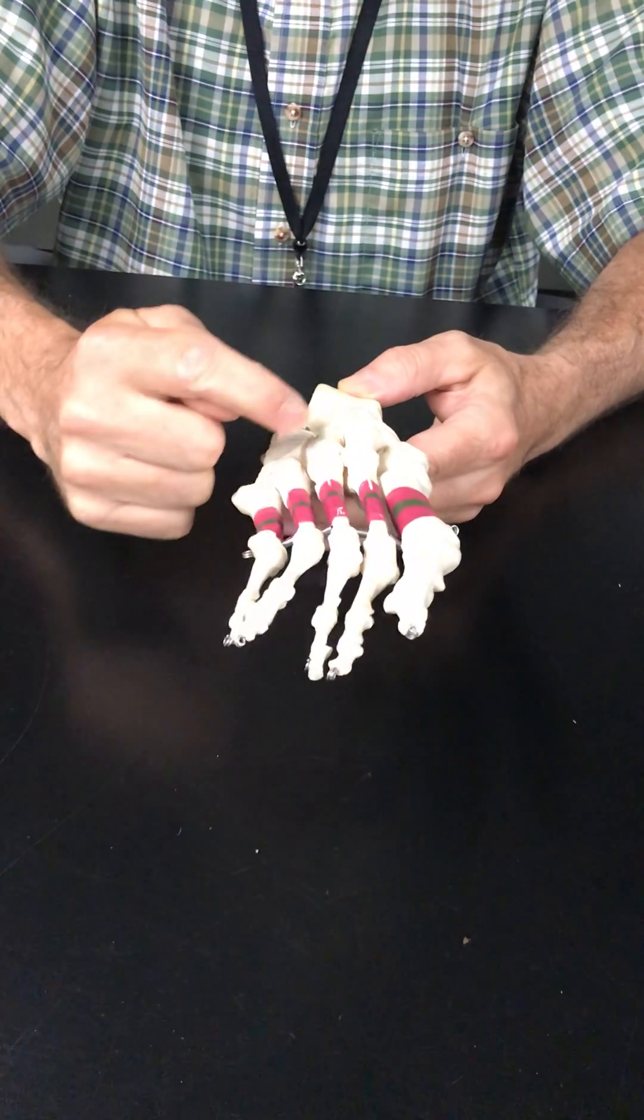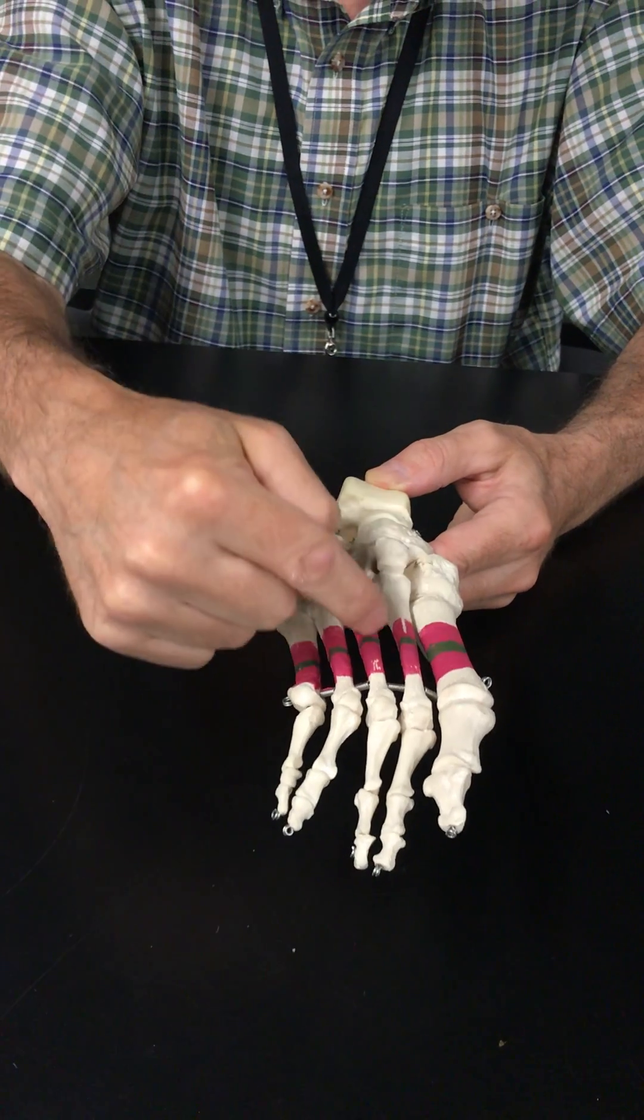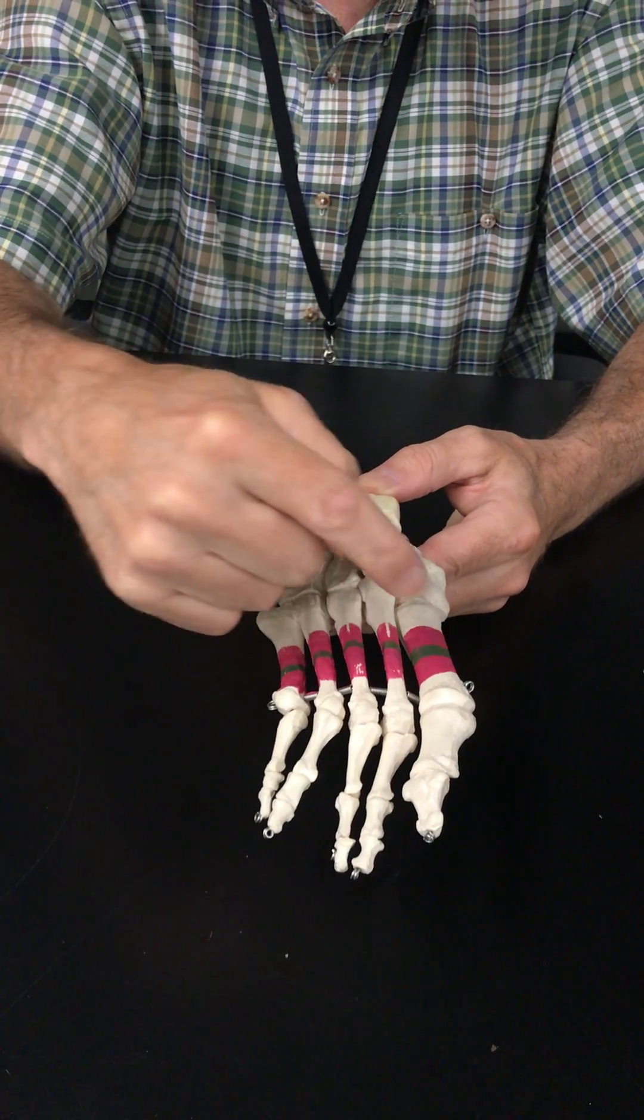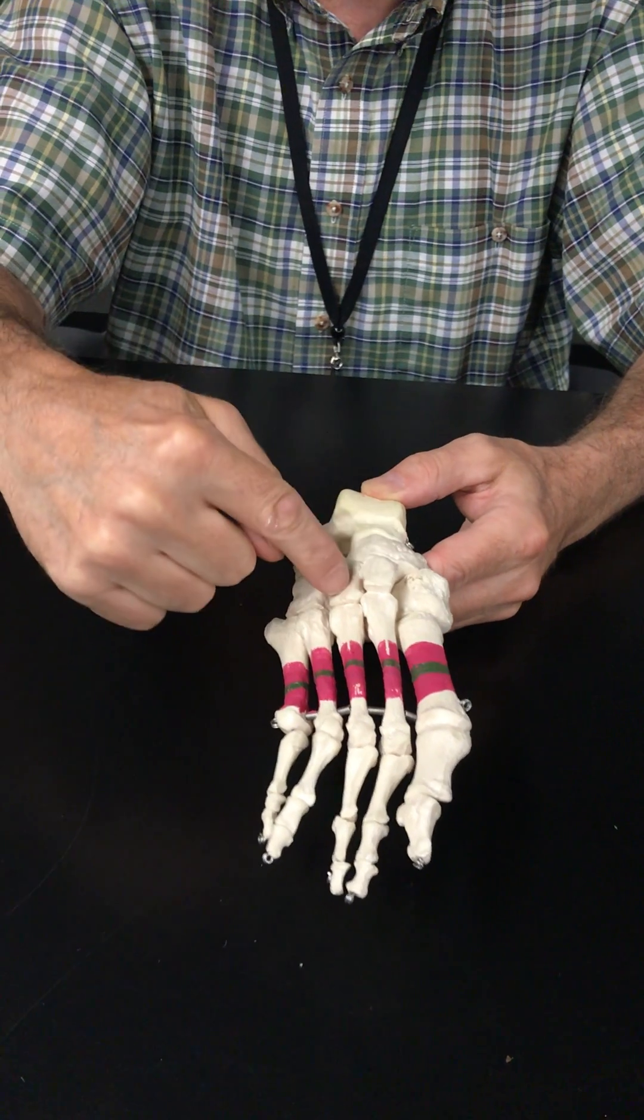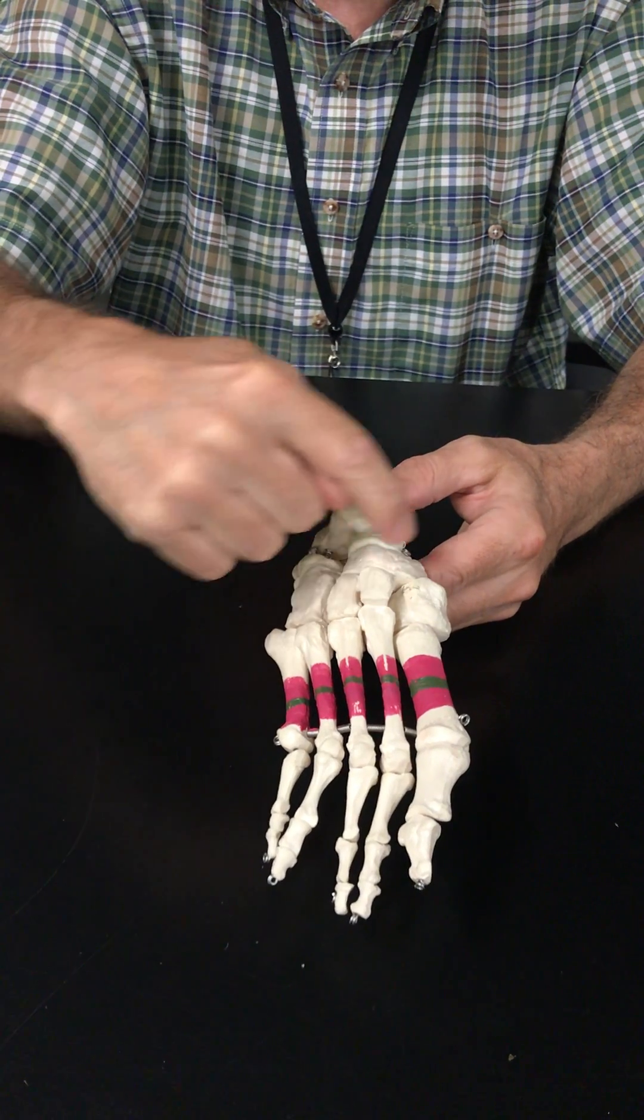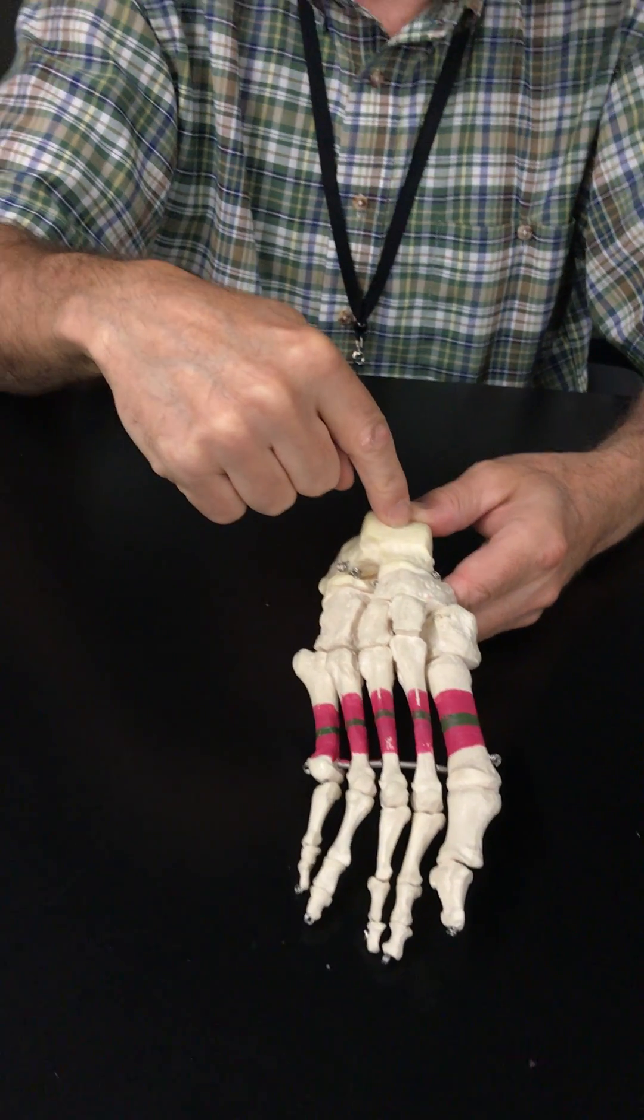And then there's a separate bone, cuneiform bone, for each of the other three toes. So you have one, two, three. And you have one, two, three cuneiform articulating with the navicular, articulating with the talus.